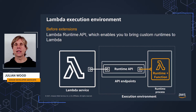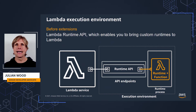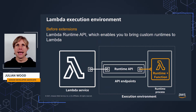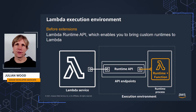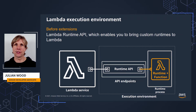Before Extensions, there was only the Runtime API, which provides an HTTP API for both managed and custom runtimes to receive invocation events from Lambda. This is how functions receive events from the Lambda service and how they return function responses back to Lambda. The Runtime API endpoint actually sits within the execution environment and securely provides the connectivity between function code and the Lambda service.